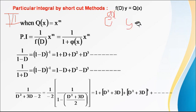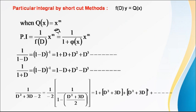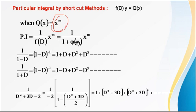Now in this third method, Q(x) = x^m. To find the particular integral PI = 1/f(D) · Q(x) where Q(x) = x^m. In this case, we take the least degree term common in f(D) and convert it into the form 1/(1 ± φ(D)). For example, in 1/(D² + 3D + 2), the least degree term is the constant term 2, so we take 2 common.